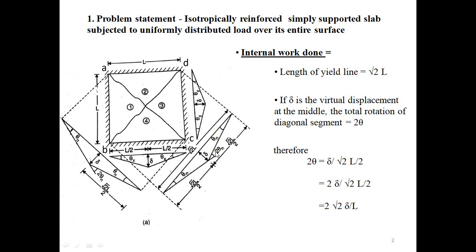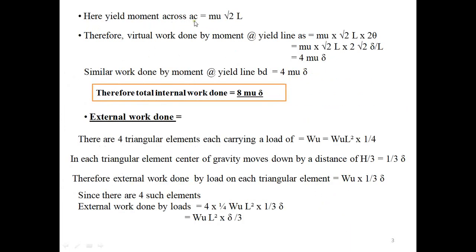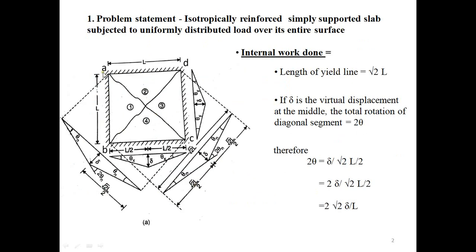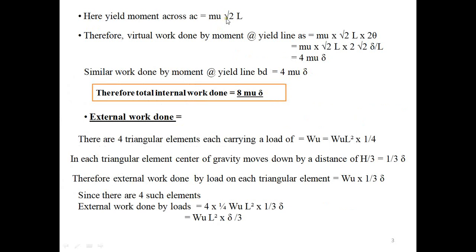Solving using trigonometry — sin, cos, and tan — where sin equals opposite over hypotenuse and cos equals adjacent over hypotenuse: 2·theta equals delta divided by (√2·L / 2), which gives 2·theta = 2√2·delta / L. The yield line moment across AC — where AC has span √2·L — is: moment = mu × √2·L × 2·theta.